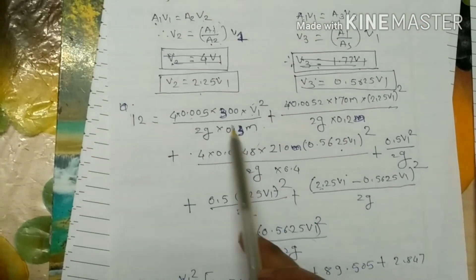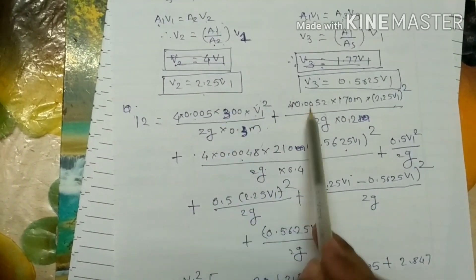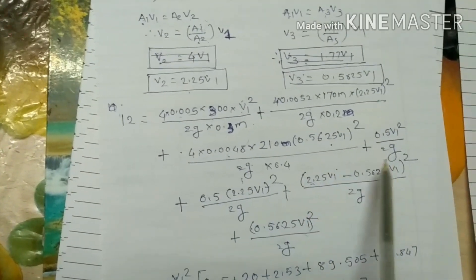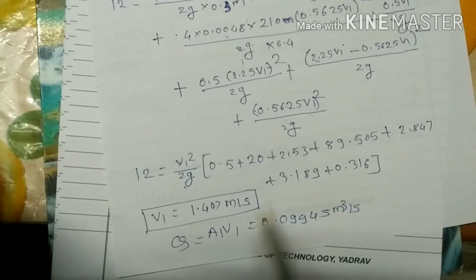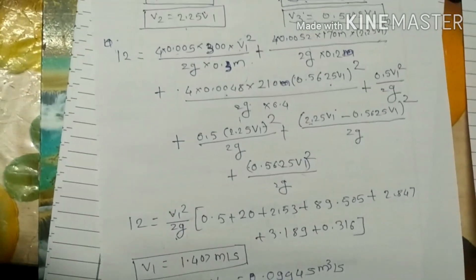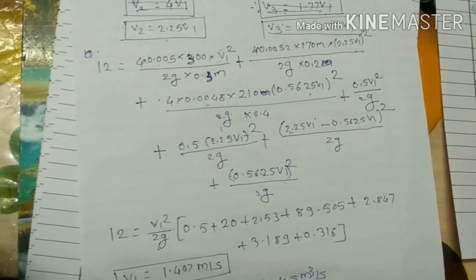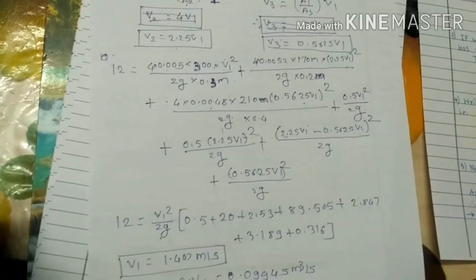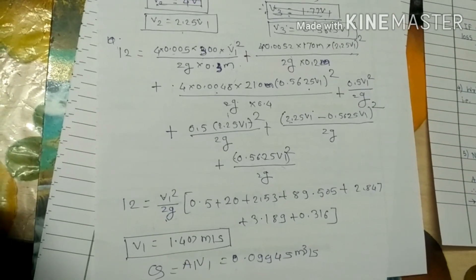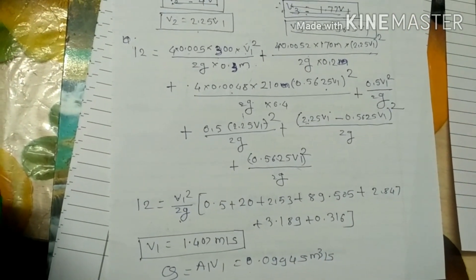That covers how to solve numericals for pipes connected in series. If you need to neglect minor losses, just consider only the three major loss steps and ignore all four minor loss terms — that's all. Practice more numericals on pipes connected in series; a question bank will be shared shortly.